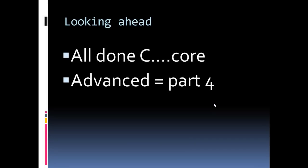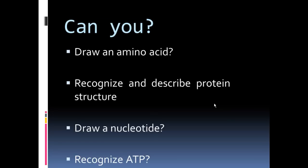We're done with the core part of this unit. If you want the advanced PLOs, watch part four. Hopefully, you can now draw an amino acid, describe protein structure, draw a nucleotide, and recognize ATP, particularly its two high-energy bonds.